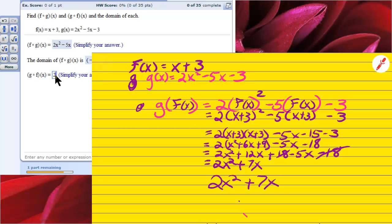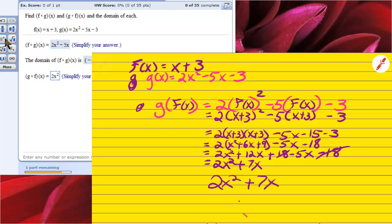2x squared, right arrow key, plus 7x. Check answer. Yay! Whew! I always worry a little bit.